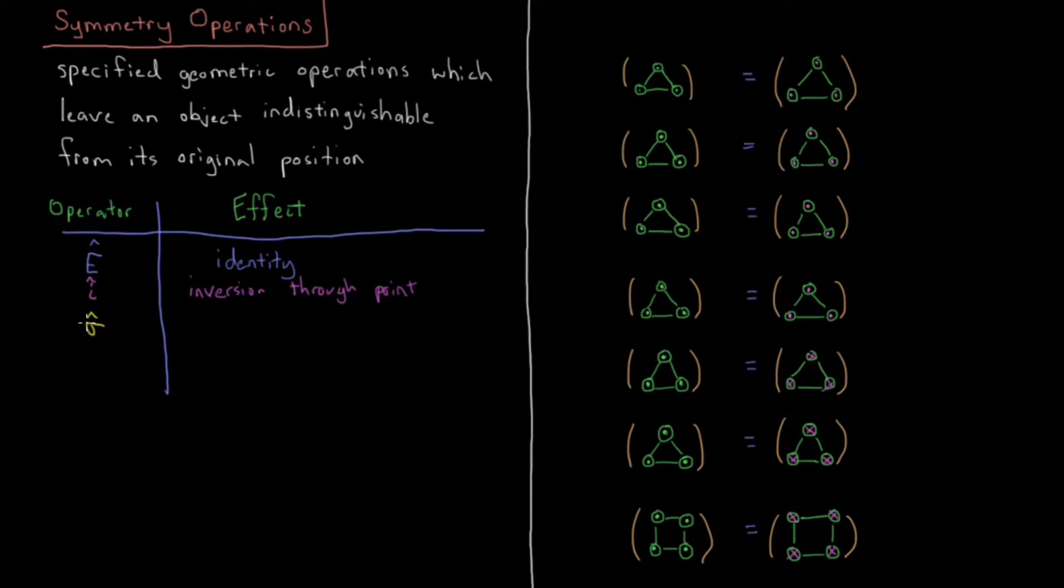We have sigma, which is a mirror plane. The caret for the operator, it's the lowercase Greek letter sigma. That is reflection through a plane. That's like you travel through a mirror and then become the mirror image of yourself through the other end of that mirror. That's going to be reflection, the sigma.